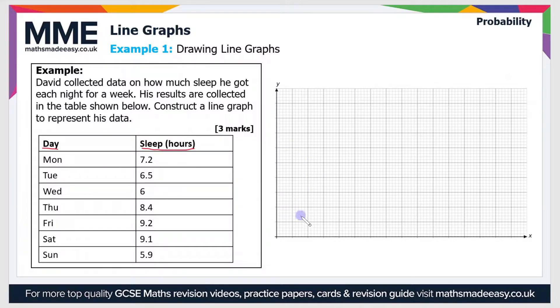Now line graphs are one of the more simple graphs to plot. Really all you have to do is choose a suitable scale. If we look at the first column, that's the days of the week. We all know there's seven days of the week, so we need a scale that's going to allow us to plot seven points. If I put the first point here and then the next one here and so on, I've got three, four, five, six, seven points equally spaced.